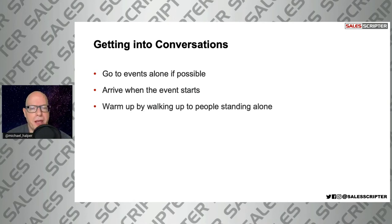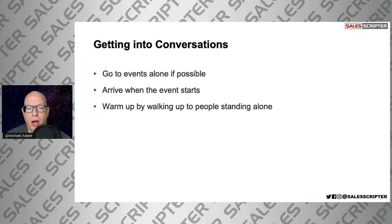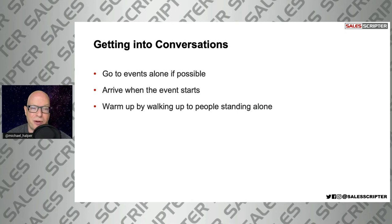When you first get to an event, even if you're an extrovert, you might feel a little anxiousness and discomfort with walking up and talking to people. A great way to warm up is to find people standing alone on the side not talking to anyone. Go walk up to them and introduce yourself — there should be less intimidation since they're not already in a conversation, and they'll usually be quite friendly because you're kind of saving them. They may feel discomfort standing there alone, and you're rescuing them. So that's a great way to warm up your networking skills.